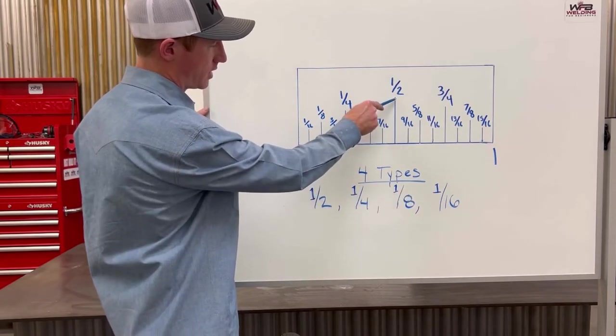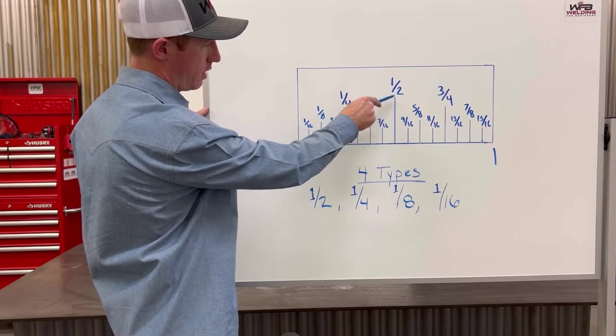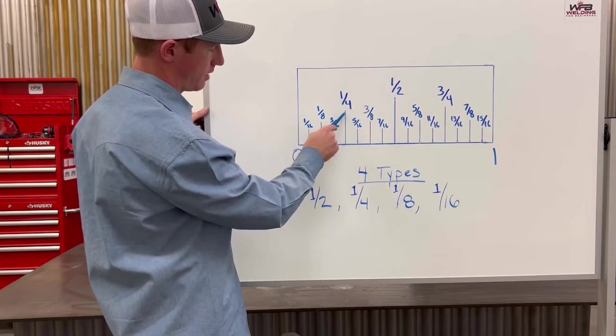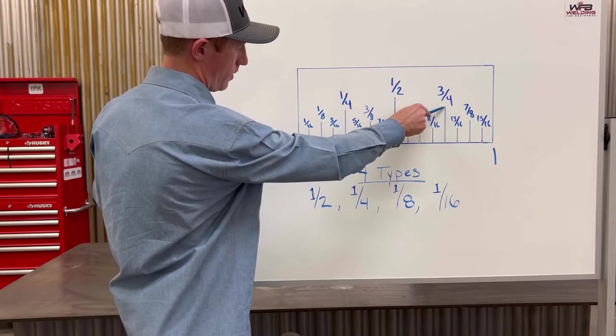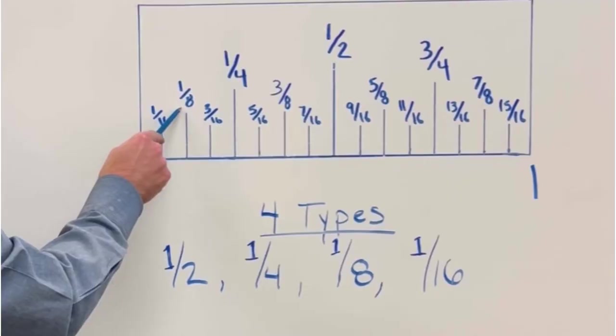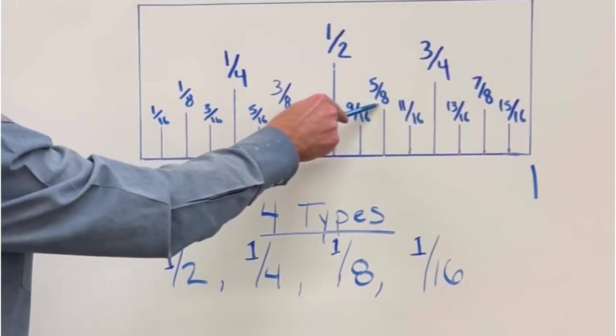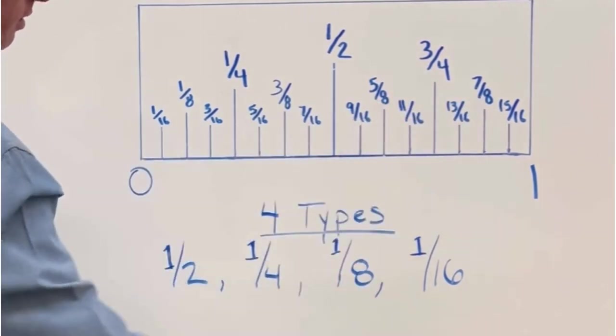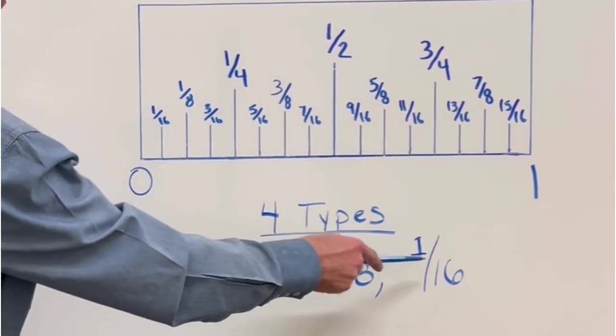The half mark is going to be the highest mark. Then from there, your quarters are going to be the second highest mark. Then you're going to go down to eighths. You have one eighth, three eighths, five eighths, and seven eighths. Then from there, you're going to have your sixteenths.